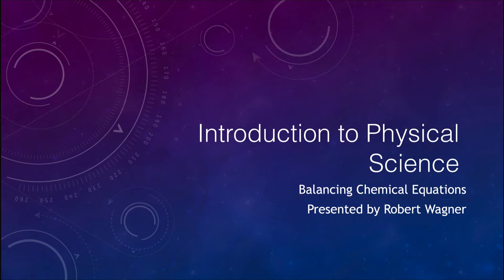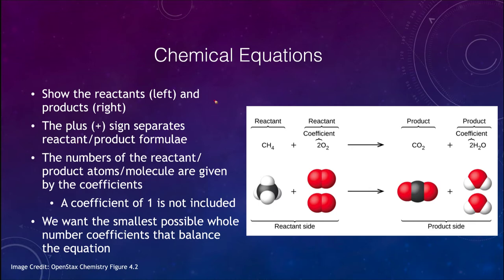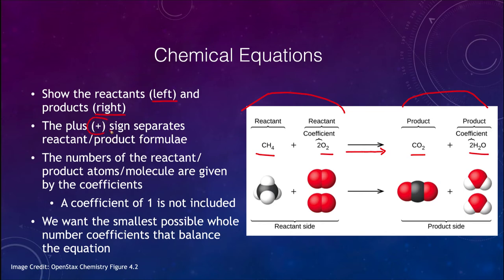When we look at a chemical equation, it has two sides. It has the reactant side on the left, and then an arrow to the product side. The reactants — in this case methane and oxygen — react to form carbon dioxide and water. So reactants are on the left, products are on the right. We use a plus sign to separate the reactants and products within each side. Methane plus oxygen yields carbon dioxide plus water. We use coefficients in front to indicate how many of each atom or molecule are given.